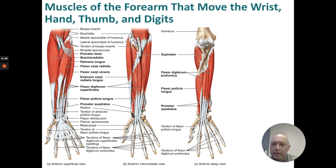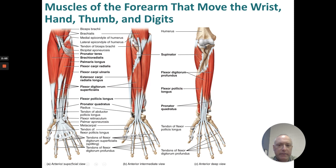Muscles that move the wrist, hand, thumb, and digits: pronator teres, brachioradialis, palmaris longus, flexor carpi radialis, flexor carpi ulnaris, extensor carpi radialis longus, flexor digitorum superficialis, flexor carpi ulnaris longus, and pronator quadratus. Looking at the anterior deep view: supinator, flexor digitorum profundus, flexor carpi ulnaris longus, and pronator quadratus.